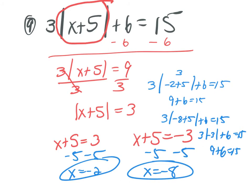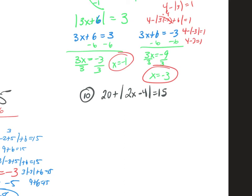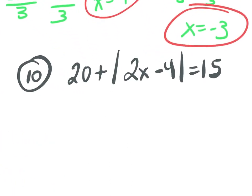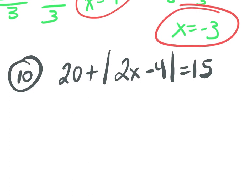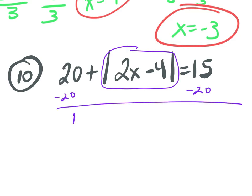So far everything has worked out nice and pretty, and you're thinking, why do I have to check all of these? Here's the reason. I guarantee I'll put something on a test with a curveball. We want to isolate our absolute value. Subtracting 20 from both sides gives absolute value of 2x minus 4 equals negative 5. Right there you can tell it's no solution, because absolute value is always a positive number.